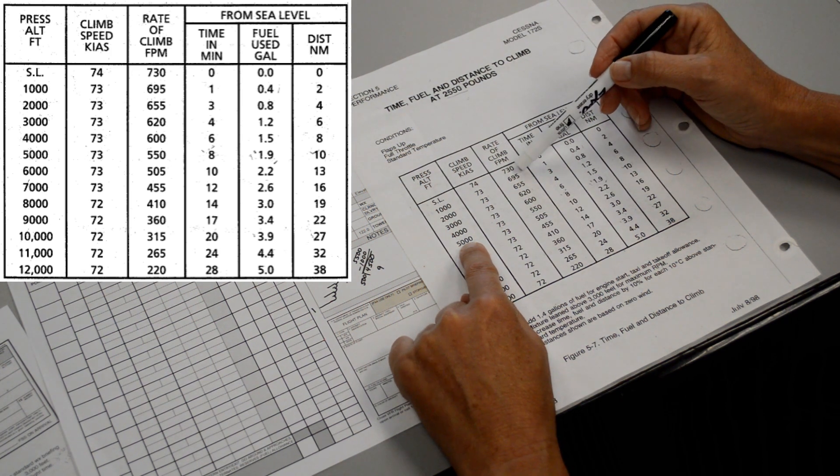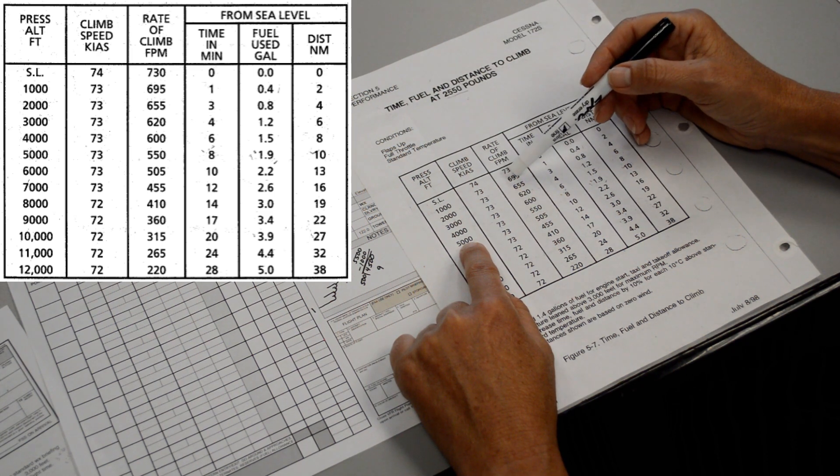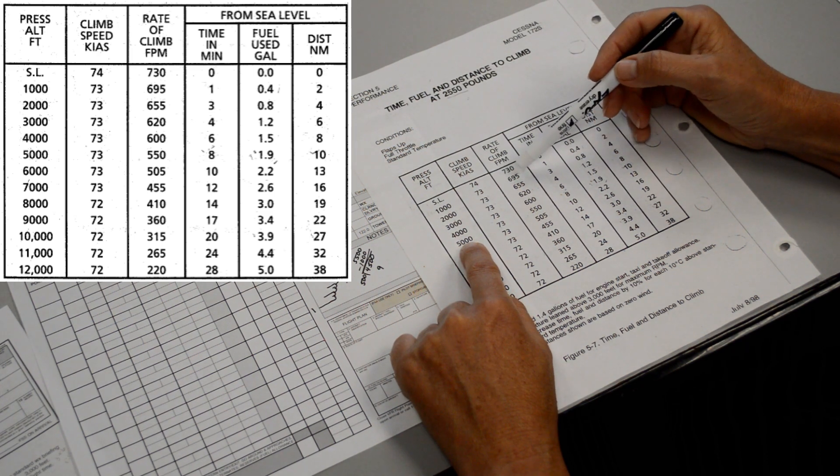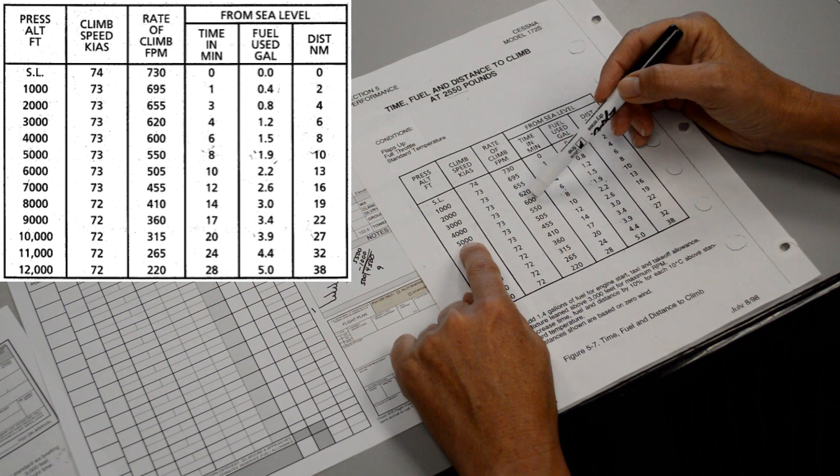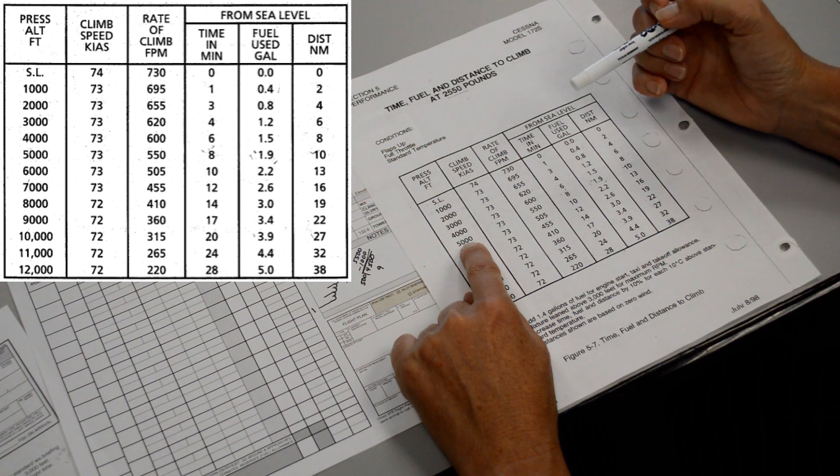Your rate of climb starts off pretty good, somewhere around 600, 700 feet, but then the rate of climb depletes as we climb higher and higher and it ends up somewhere around 500, 550 feet a minute.